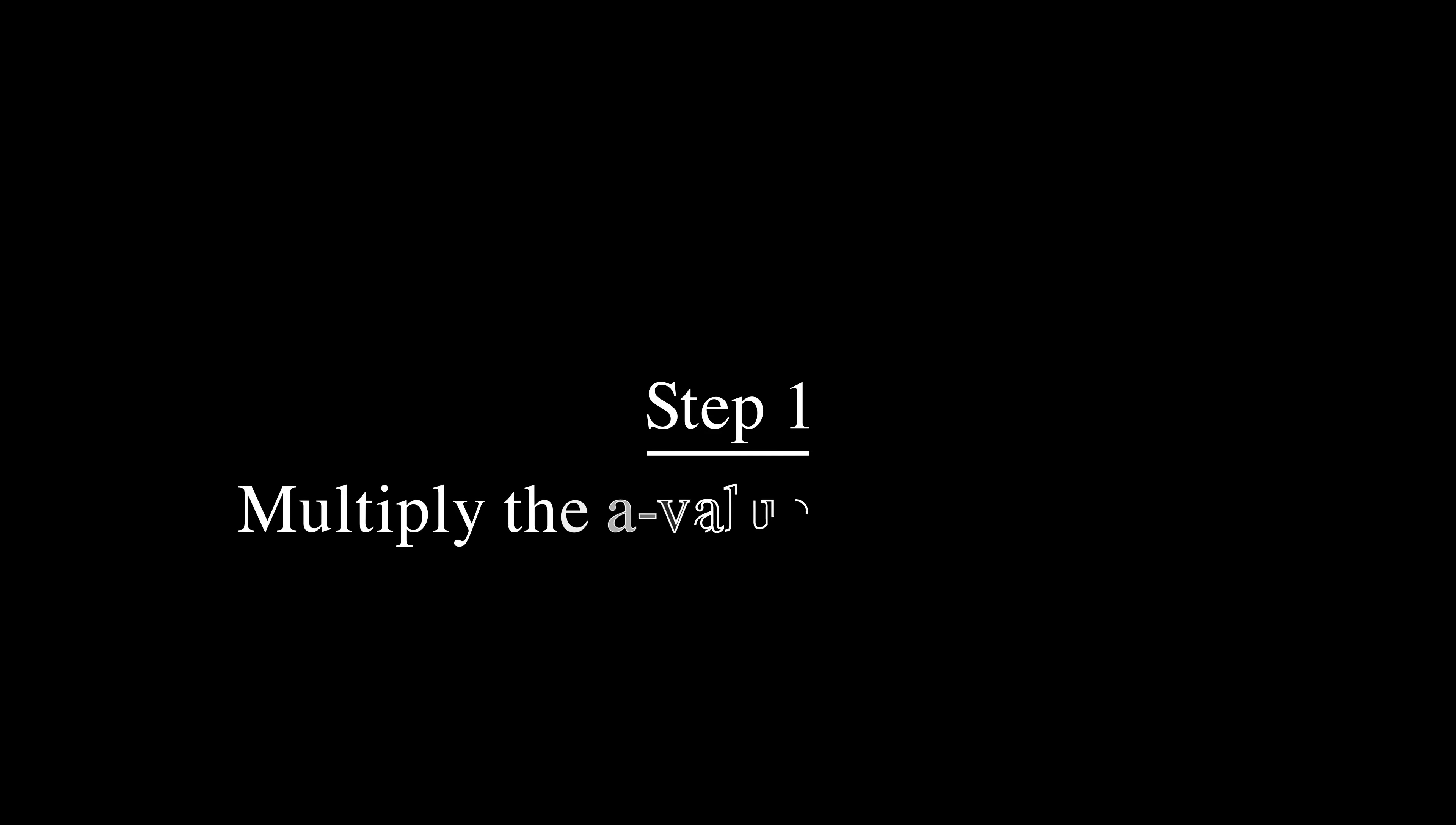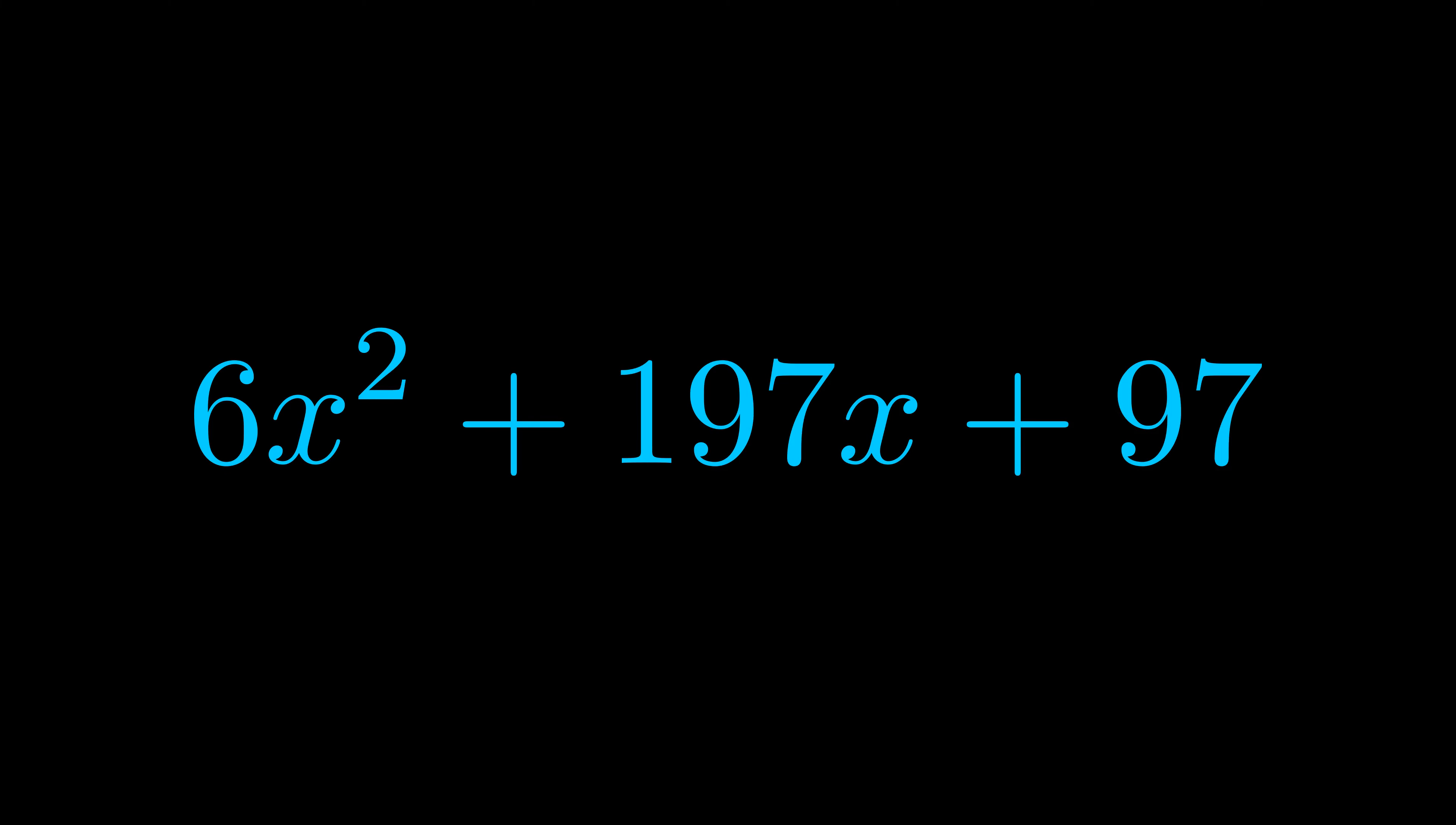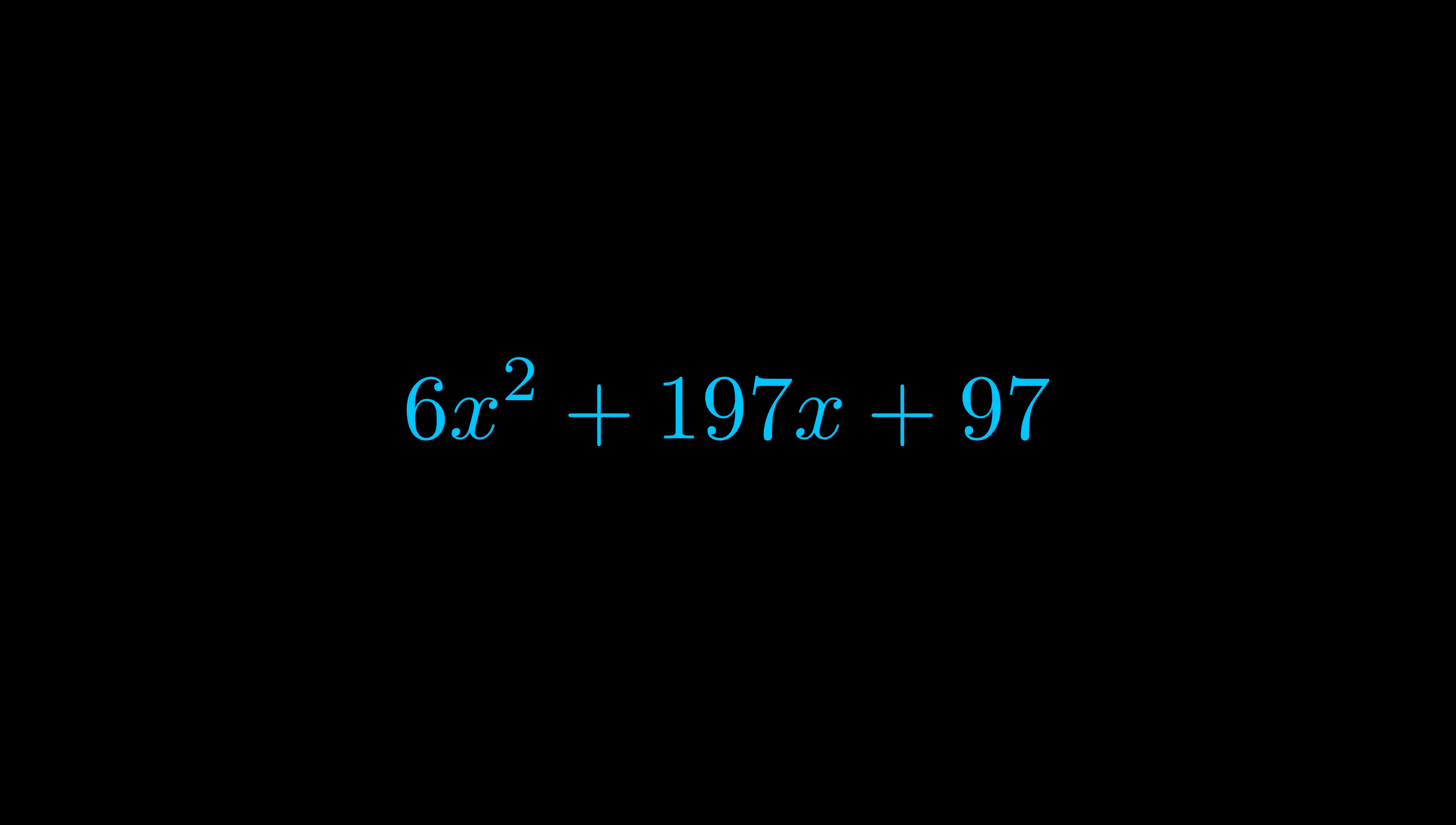Step one when factoring an equation of this form is to multiply the a value by the c value. Here we can see that our a value is the coefficient on the x squared term and our c value is the constant term. When we multiply these two values we get this value here in magenta.